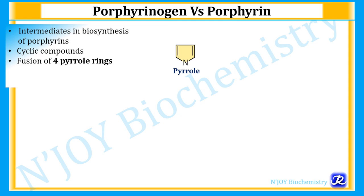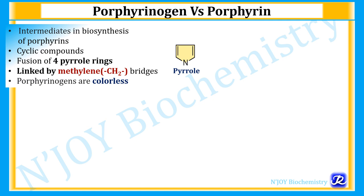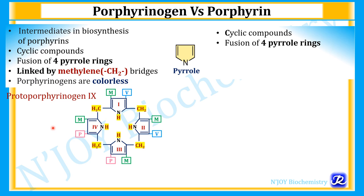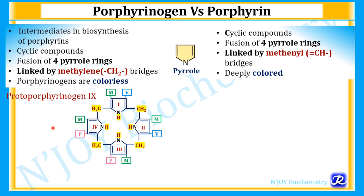Porphyrinogens are cyclic compounds formed by fusion of four pyrrole rings, and these four pyrrole rings are linked by metheny bridges. These porphyrinogens are colorless. This is the structure of protoporphyrinogen 9 — here you can see four pyrrole rings 1, 2, 3 and 4 linked by metheny bridges. Now, porphyrins are also cyclic compounds and derivatives of porphyrinogen, formed by fusion of four pyrrole rings, but they are linked by methenyl bridges and are deeply colored.